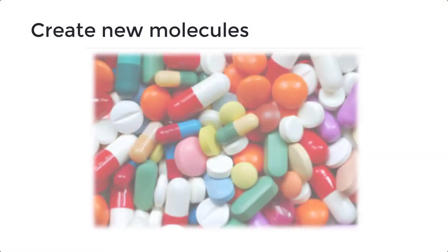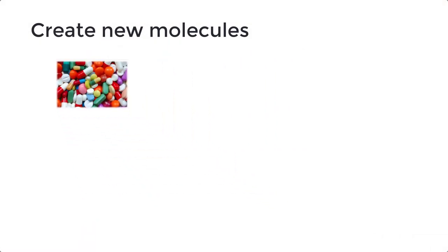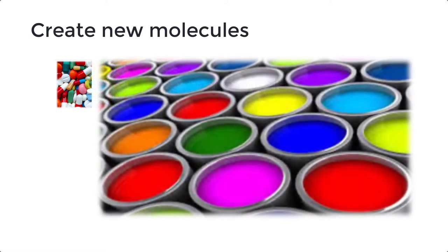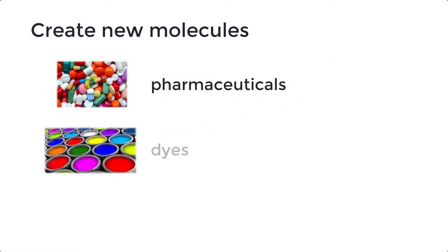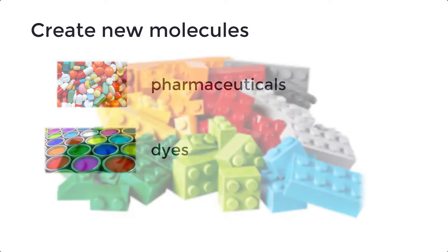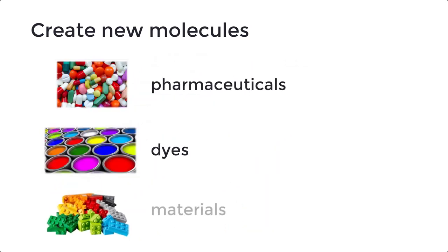One thing we can do is make pharmaceuticals—drug molecules to cure disease. We can make dyes to make our paints better, longer lasting, and less toxic. There's also a huge area of materials where we try to make new materials with new properties. We can make materials that are lighter or stronger than previous things, and often when we do this we're inspired by nature, but we're not trying to copy nature.